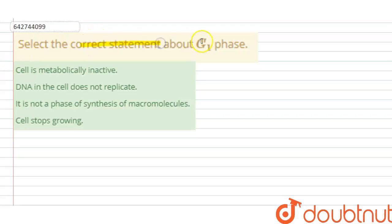select the correct statement about the G1 phase. All right, so as we all know that the cell cycle consists of two phases.